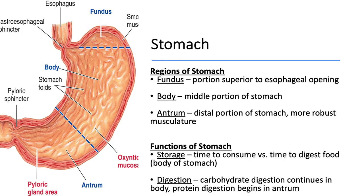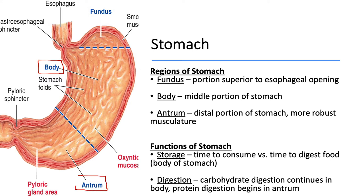The stomach has three main regions divided based on function. At the top, with its characteristic J-shape, we see the fundus — which is superior to the esophageal opening. The fundus has the weakest muscular contractions and a slightly higher pH than other sections. Within the fundus, we find the pacemaker cells that initiate the slow wave potential moving down the rest of the stomach to aid in mechanical digestion. Next is the middle section, the body, which predominantly serves as storage with some digestion. The body is followed by the antrum, and both the body and fundus have weaker musculature compared to the antrum.